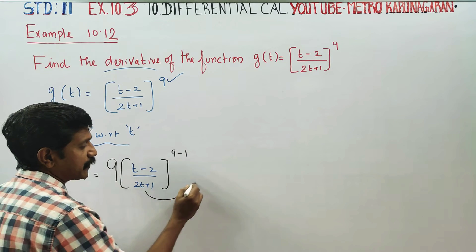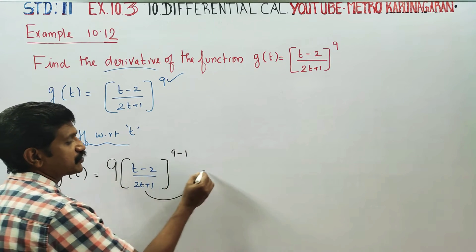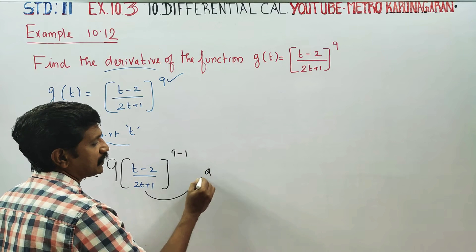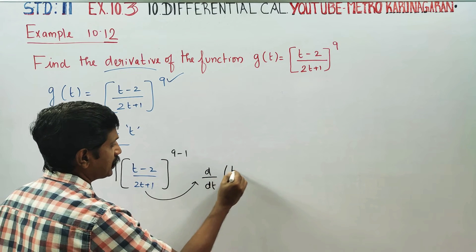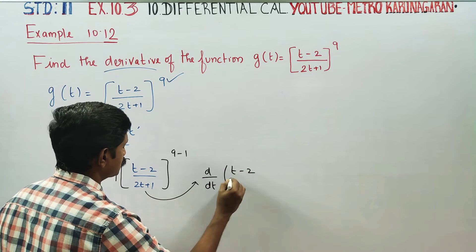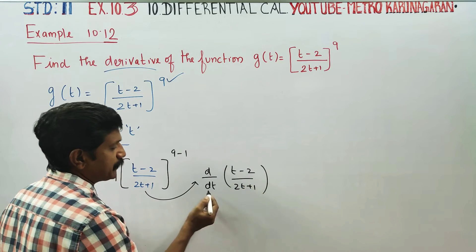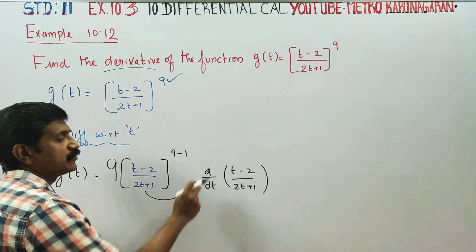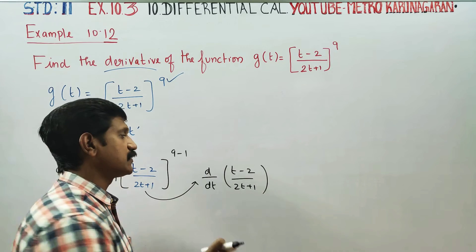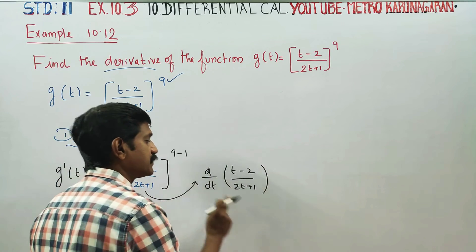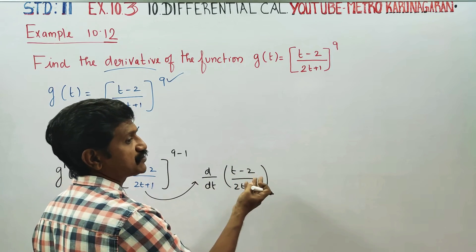Then we can differentiate. D by dt of t minus 2 by 2t plus 1. If you differentiate this, this is the next step. D by dt — if you differentiate this, we can do it.